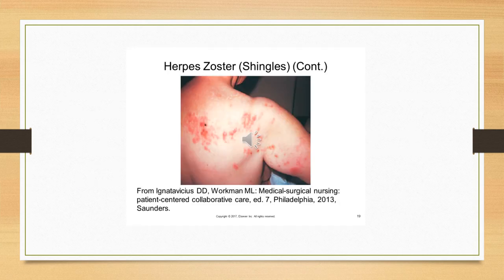Herpes zoster or shingles presents as a cluster of skin vesicles that appear unilaterally and follow the path of a sensory nerve, usually on the trunk or face. It's associated with tingling, itching, burning, and is typically quite painful. Patients may also have fevers and fatigue. Within two to four days, they may develop severe deep pain, pruritus, and paresthesia — a burning, prickling, tingling sensation — along with chills and GI symptoms.